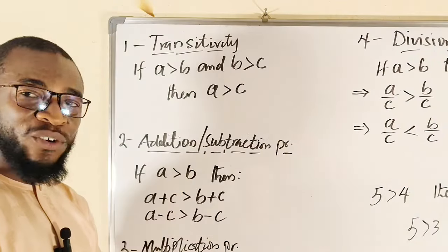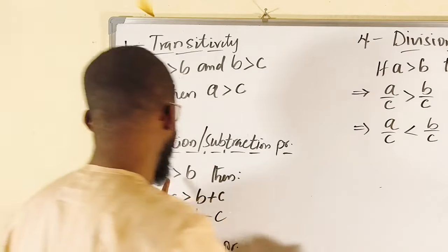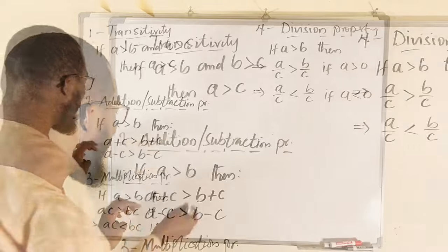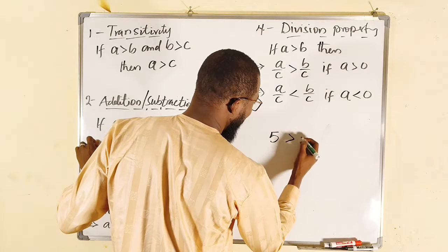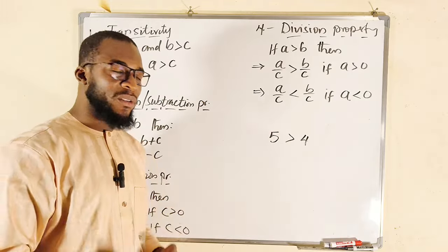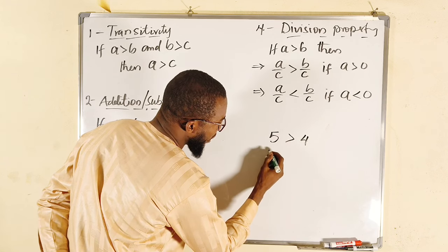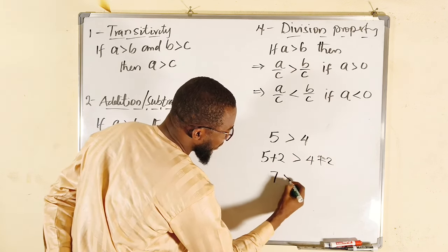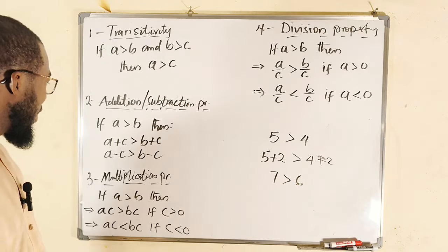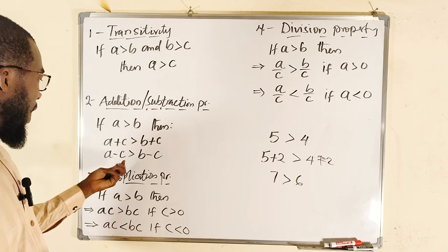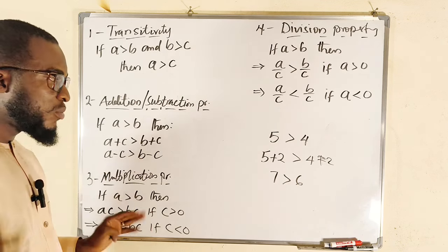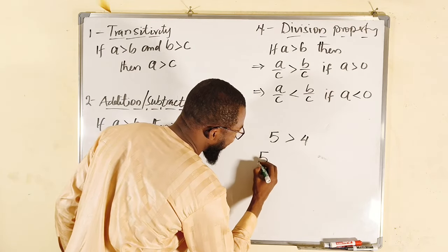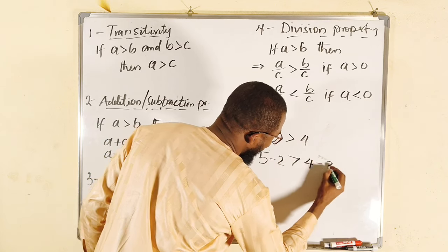The second property is addition and subtraction. If a is greater than b, then a plus c must also be greater than b plus c. For example, if a is 5 and b is 4, adding 2 to both: 5 plus 2 is 7, which is greater than 4 plus 2 which is 6. Similarly, subtracting 2: 5 minus 2 is 3, which is greater than 4 minus 2 which is 2.